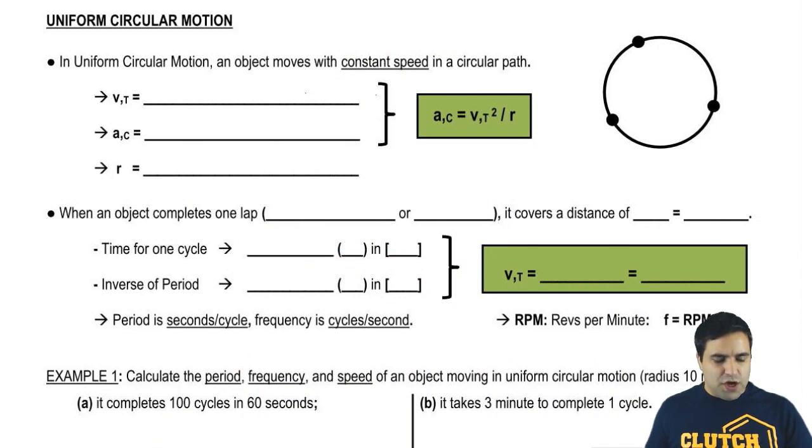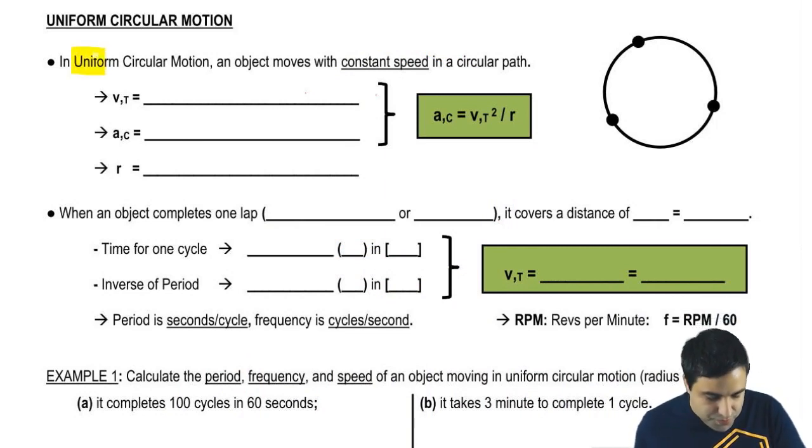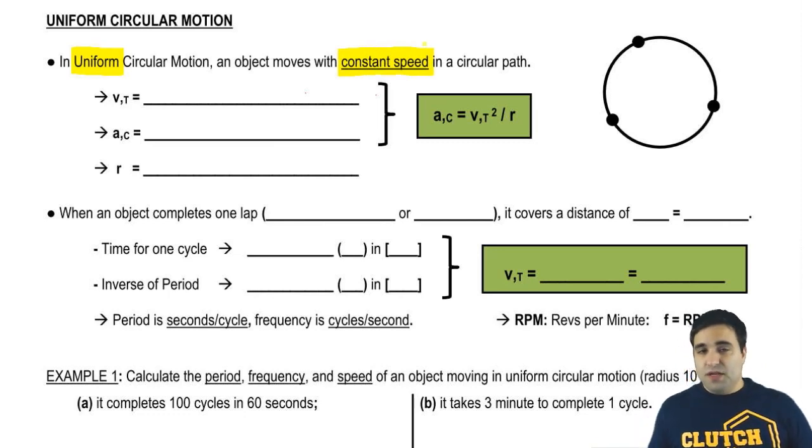So in uniform circular motion, an object moves with constant speed in a circular path. That's the definition. The uniform part of the term means constant speed. You can think of it as uniform speed. Because it's going to move with constant speed, this thing will be a uniform motion around a circle.